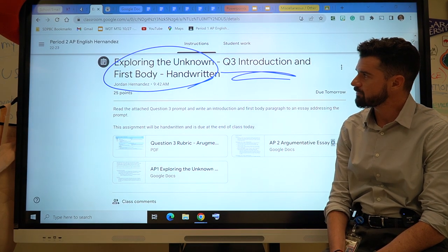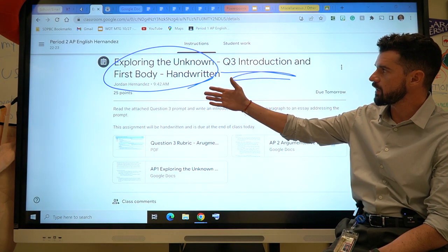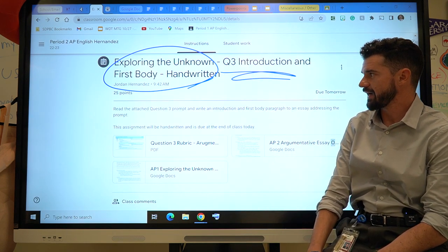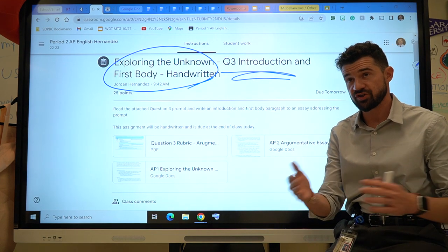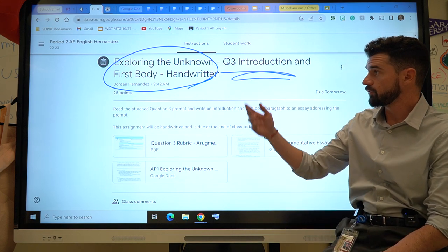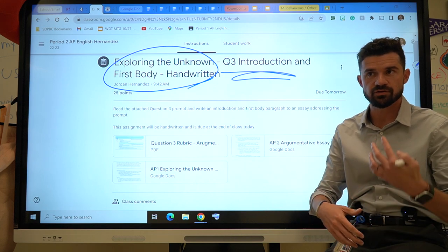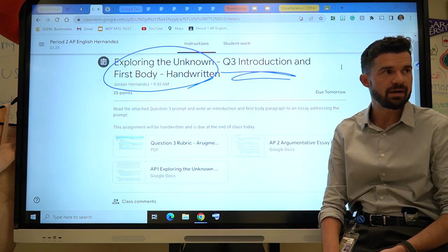Hello and welcome back. We have question three, exploring the unknown. This is one of the most reviewed topics just because the exam and how it's changed for AP Lang, Q3 is doing a lot more like resiliency, grit, mental health, school related topics.